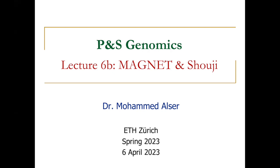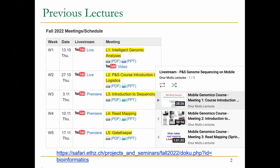Good morning everyone. Today we will continue with the read mapping problem, which is one of the most commonly used steps in almost all bioinformatics analyses. This is a very important step, and normally bioinformaticians deal with this on a daily basis, especially if they are doing a lot of sample sequencing. We'll continue with two filters: last week we explained about Gatekeeper, which is one of the pre-alignment filters. Today we'll continue with MAGNET and SHUJI, which are two filters proposed by the group. You can still access all the slides and schedule online using the link in the footer.